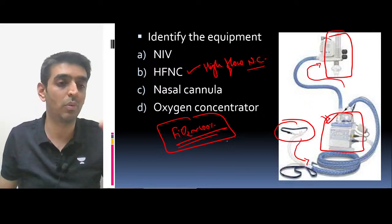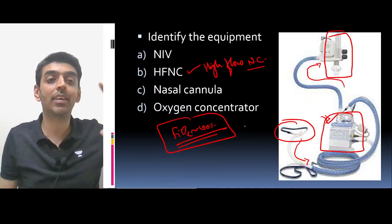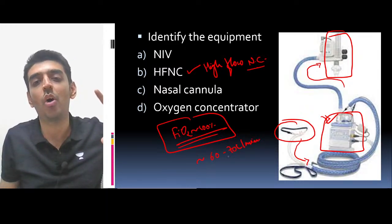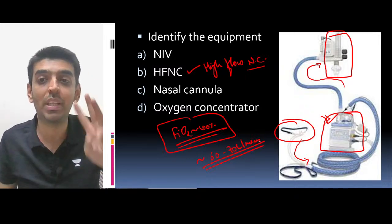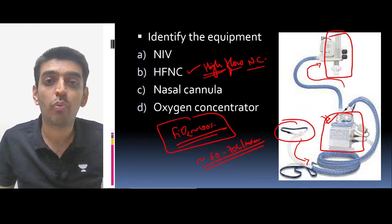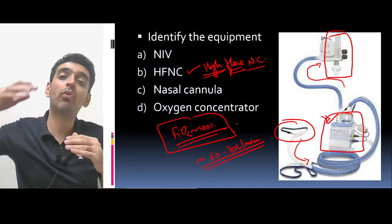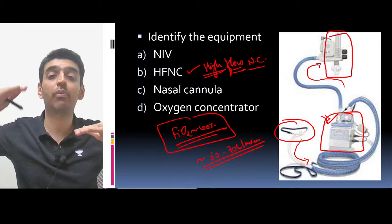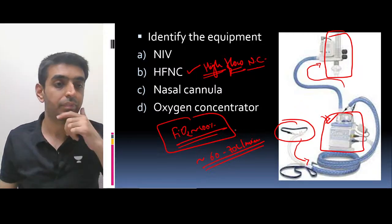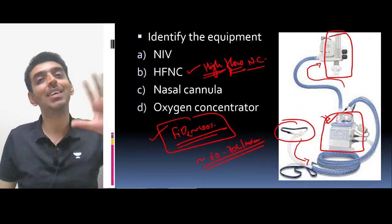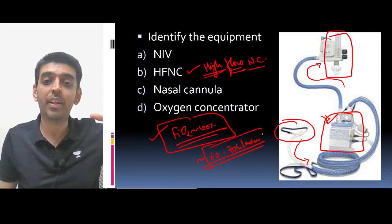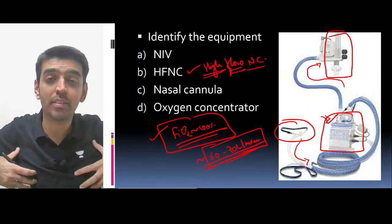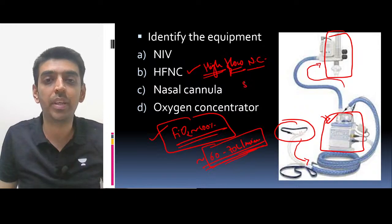With high flow nasal cannula, we can give around 60 to 70 liters per minute of oxygen. That is why the name — high flow nasal cannula — very high flow rates can be maintained. The FiO2 which can be delivered is up to 100% maximum, and the flow rate maximum is around 60 to 70 liters per minute.